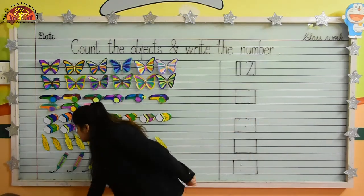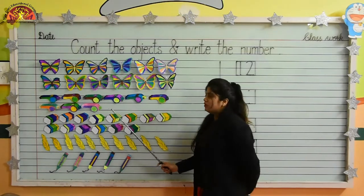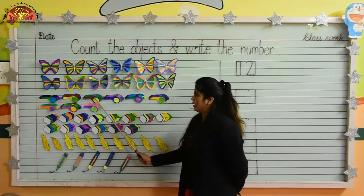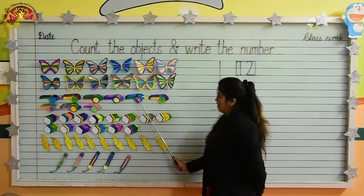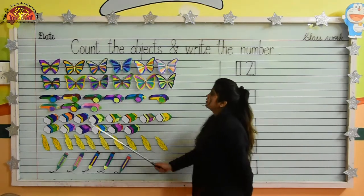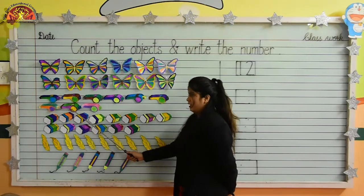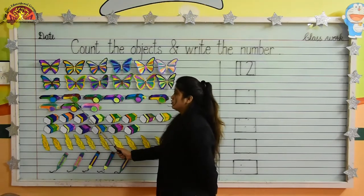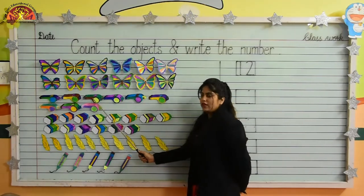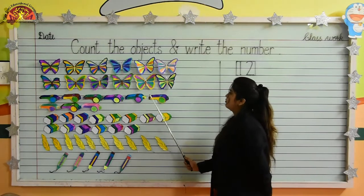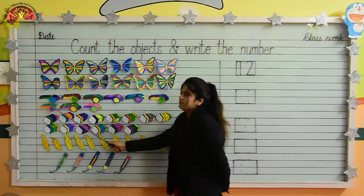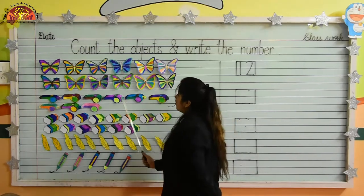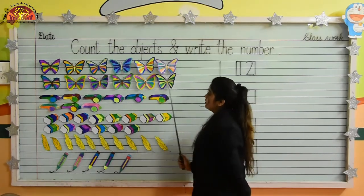Tell me kids, how many whistles are there? Let's count with me: 1, 2, 3, 4, 5, 6, 7, 8, 9. Again: 1, 2, 3, 4, 5, 6, 7, 8, and 9. There are 9 whistles.